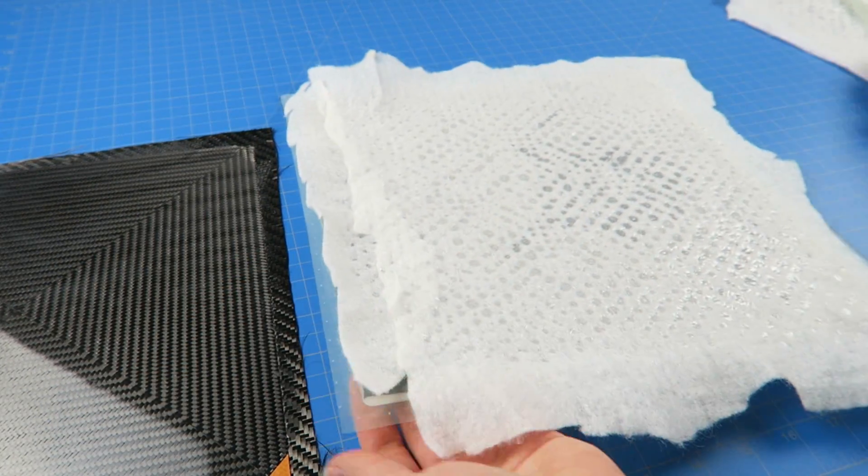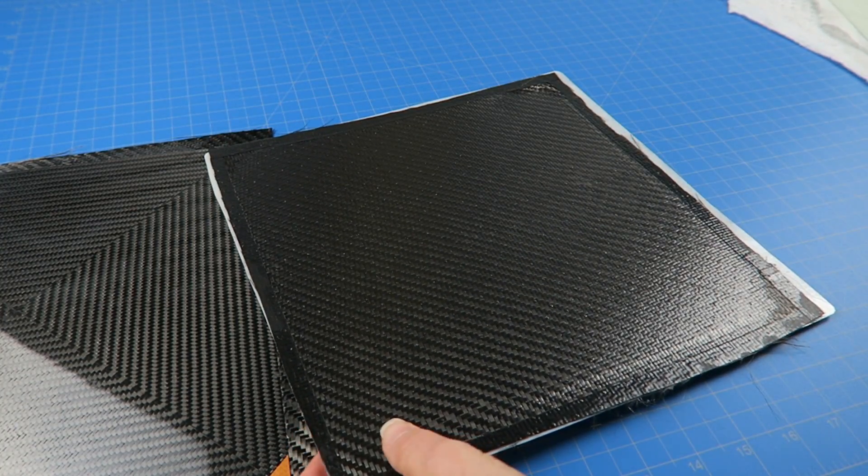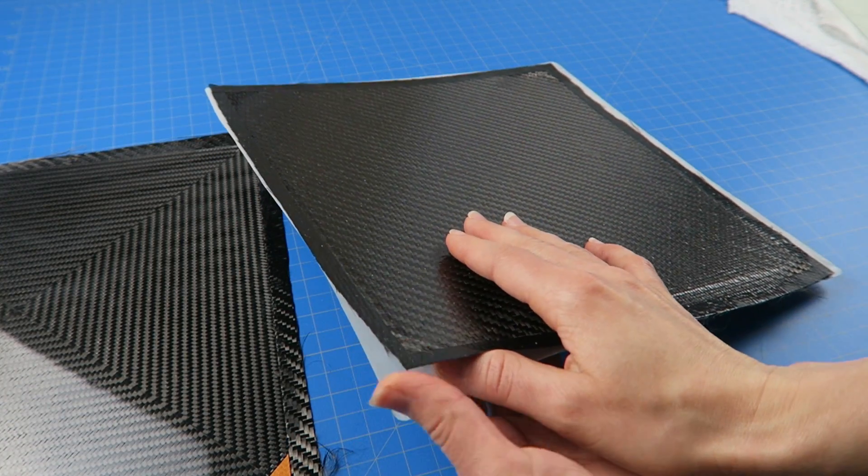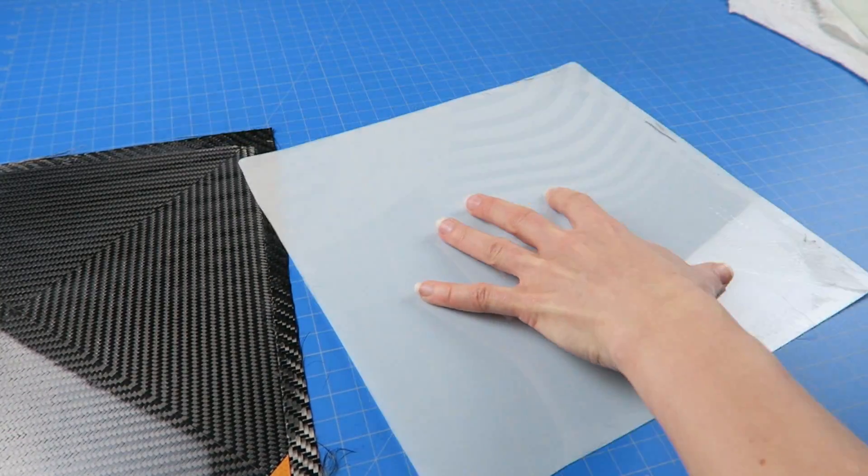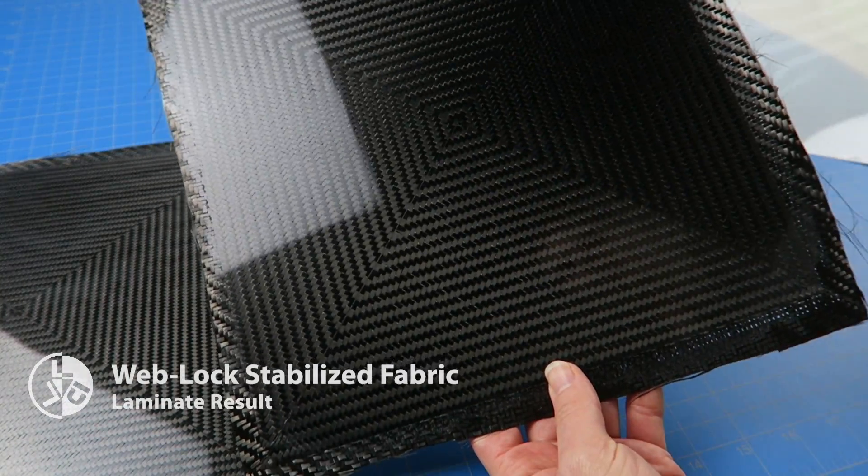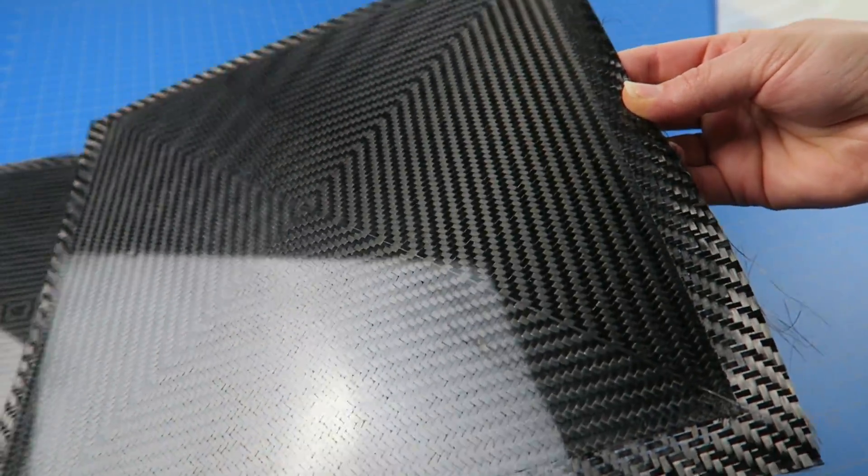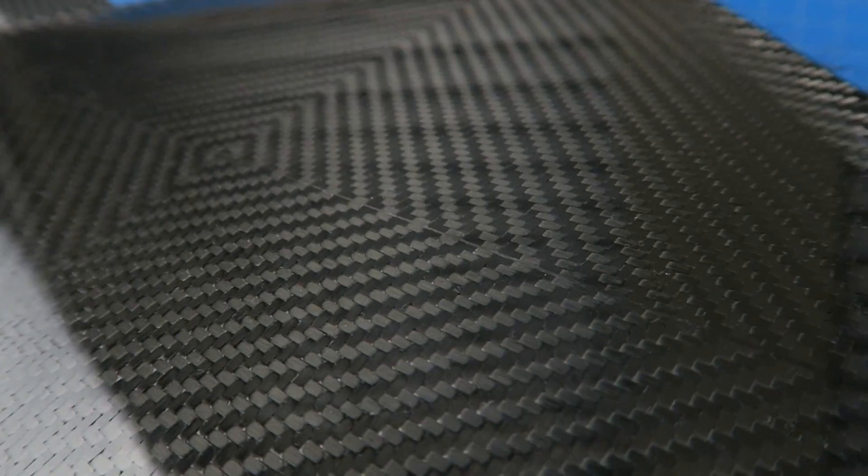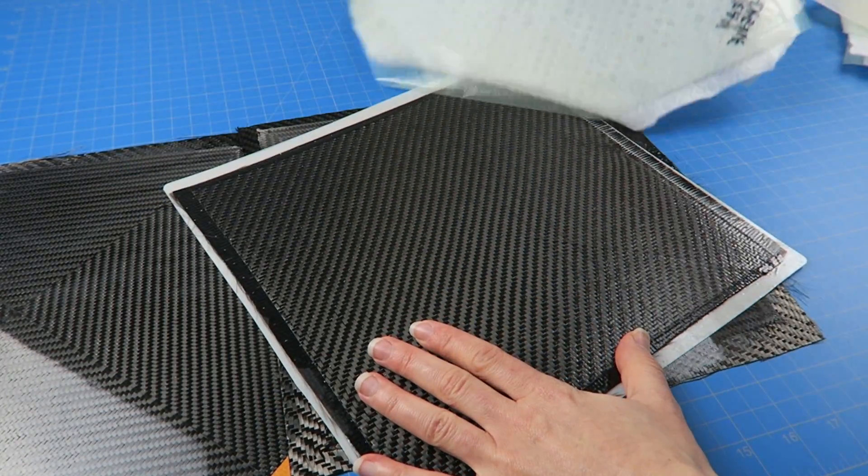Number two, the WebLock version. This is looking quite nice. There are some stray fibers that got into the mix, so that's definitely one of the main things to watch out for if you're doing something detailed like this, is to keep track of those fibers and carefully clean each piece before placing it. But they're both looking pretty good, so let's check out this third one and see how the spray adhesive version compares.